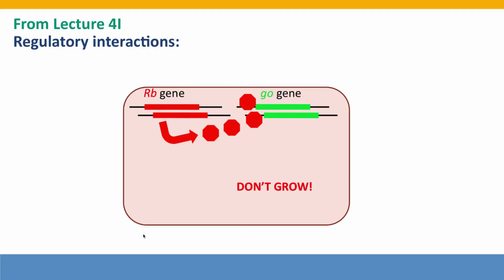Here's that same situation from the perspective of the regulatory interactions diagrams that we used in Module 4. I've renamed what we were calling the stop gene — I've named it the RB gene. The RB gene is functioning as a stop gene. Early in retinal development, the RB gene is inactive and the cells are able to divide. But late in retinal development, the RB gene becomes active and it shuts down the genes that allow cell division.